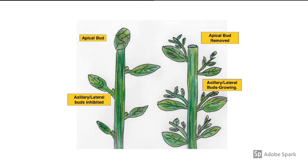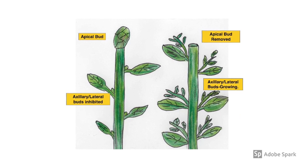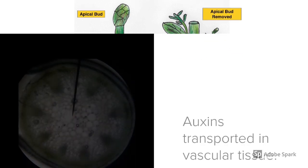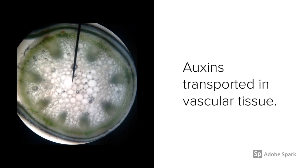Removing the apical bud can result in a low, bushy plant because side branching is no longer inhibited. Looking at this diagram, the picture on the left shows a tall, lean plant with few side branches because the apical bud is still in place producing auxins. The picture on the right has the apical bud removed and side branching is no longer inhibited, so it develops nice side branches. Auxins are transported downwards through the plant in vascular tissue, particularly phloem.